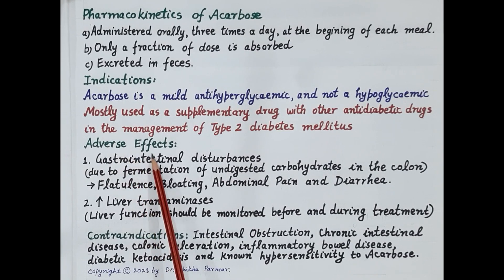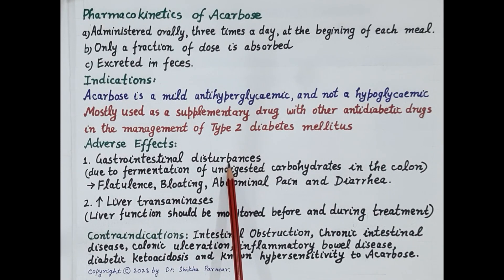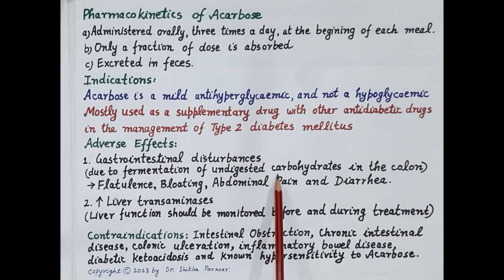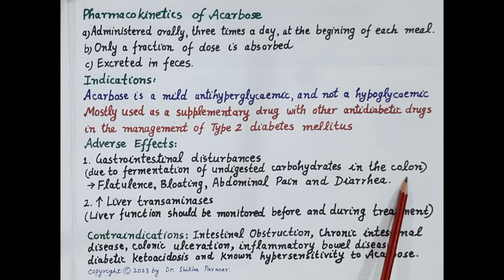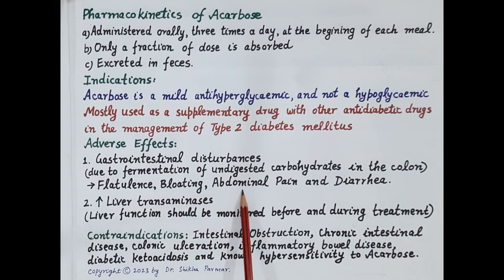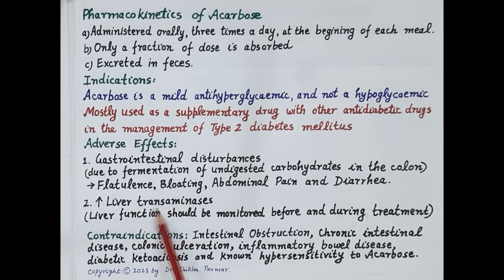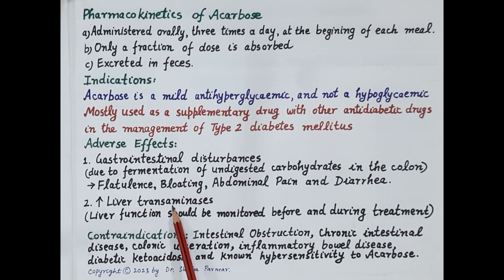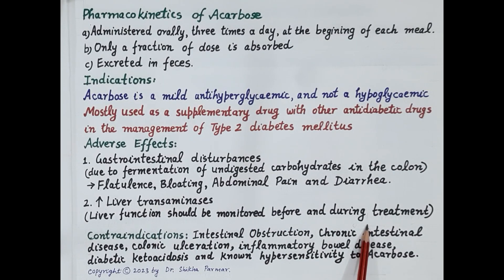Let's understand the adverse effects of acarbose. Gastrointestinal disturbances are the most commonly reported adverse effects, produced due to fermentation of undigested carbohydrates by bacteria in the colon, causing excessive gas formation. Flatulence occurs in around 75–78% of cases; bloating, abdominal pain, and diarrhea can also occur. Acarbose can cause a rise in liver transaminases, and therefore liver function should be monitored before and during treatment.